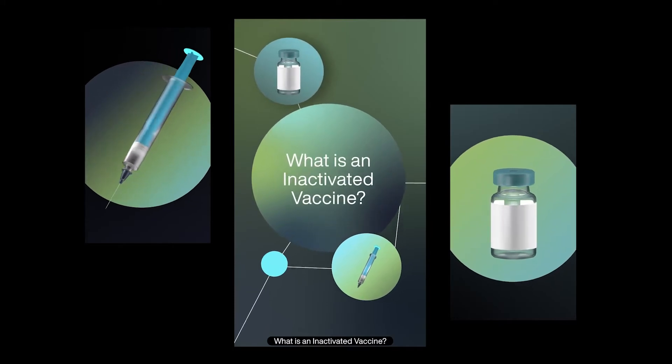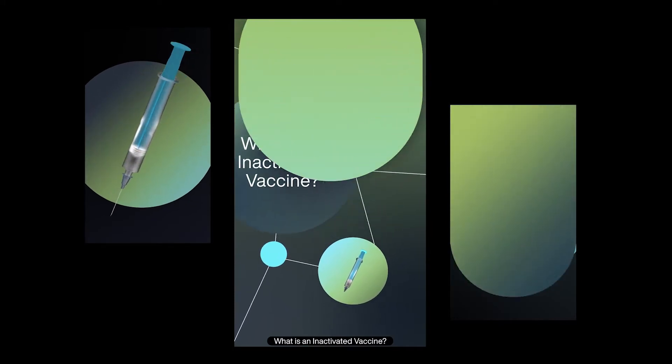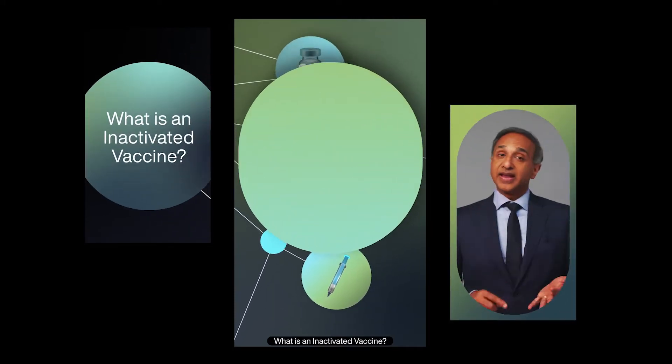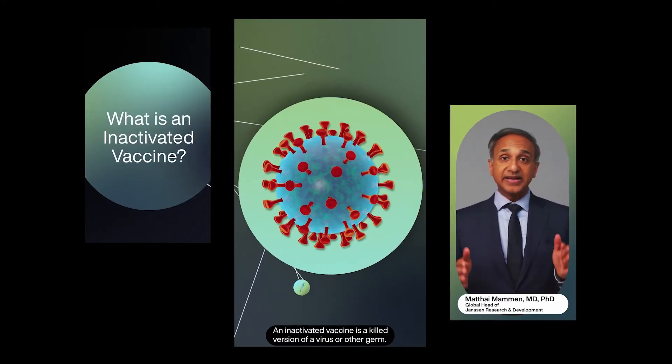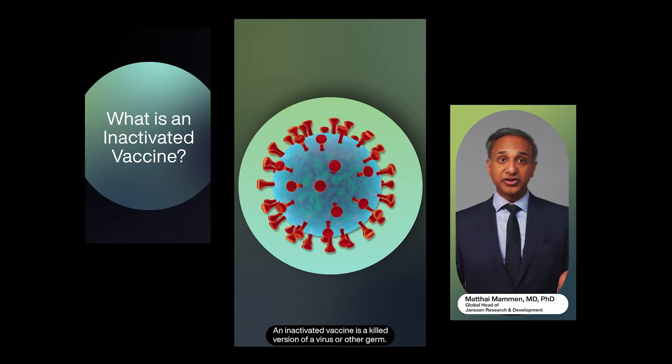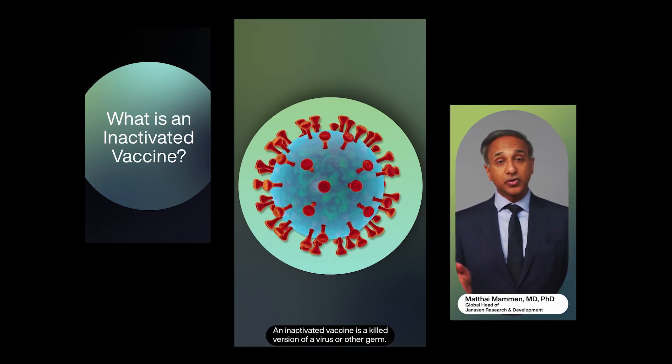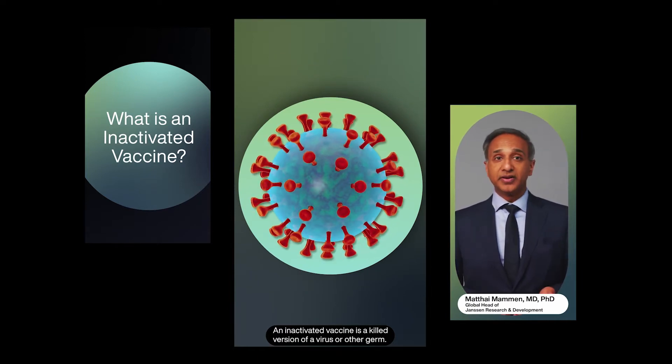What is an inactivated vaccine? An inactivated vaccine is a killed version of a virus or other germ.